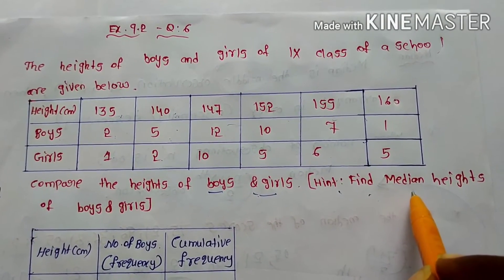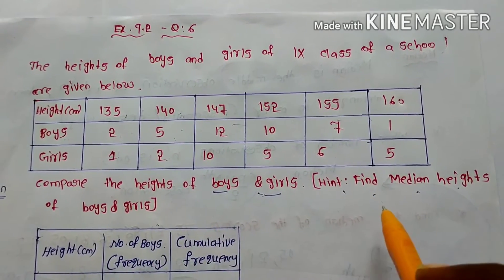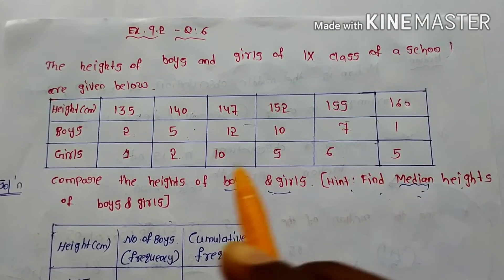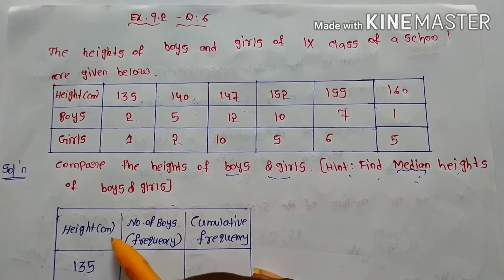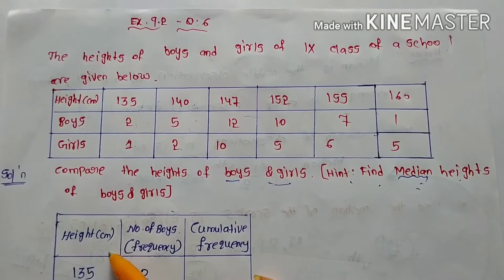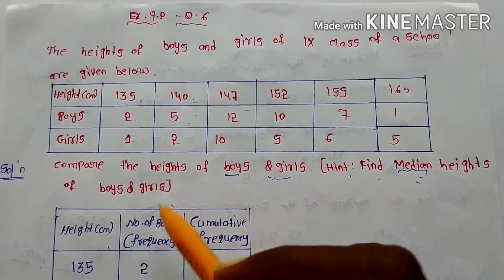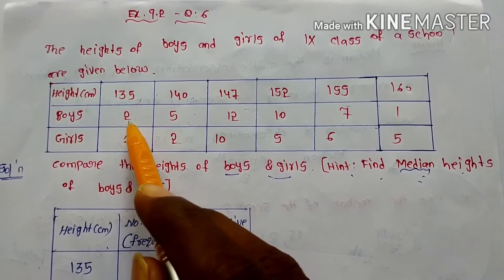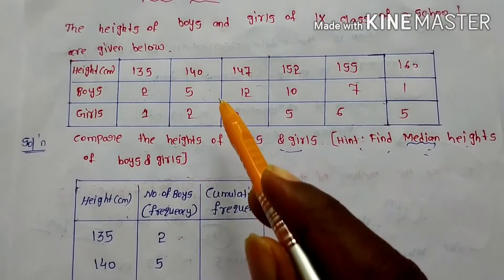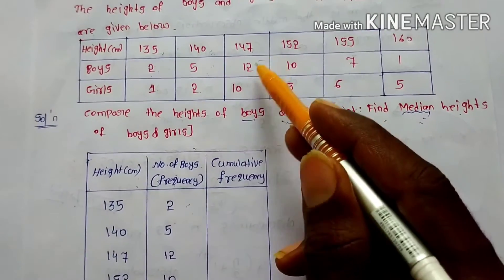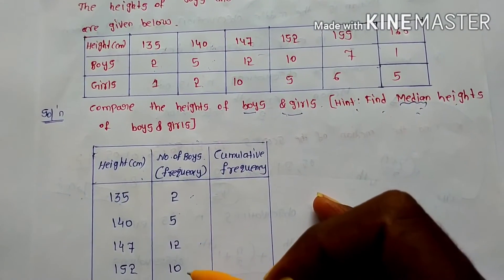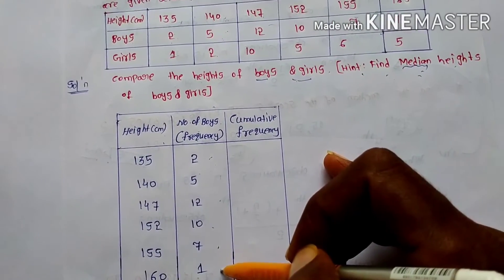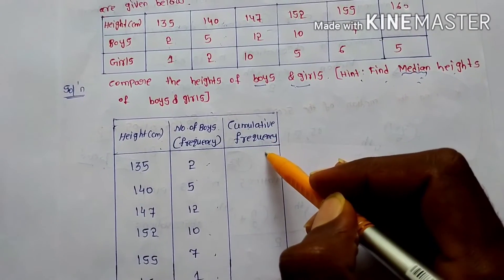To compare, we find the median heights of boys and girls. First, write the heights as per the question, then write the number of boys — that is, the frequency. For 135 cm: 2 boys; 140: 5; 147: 12; 152: 10; 155: 7; 160: 1. Next, we find the cumulative frequency.